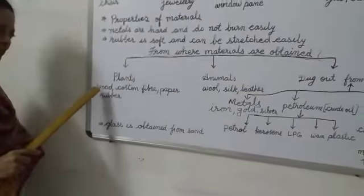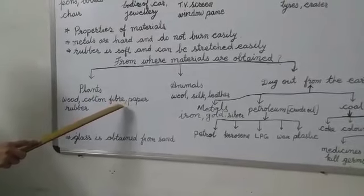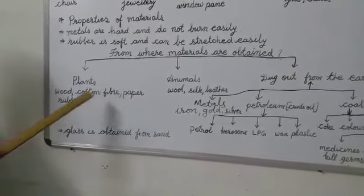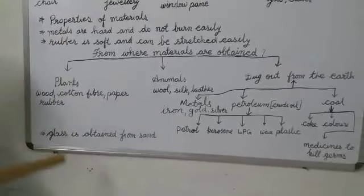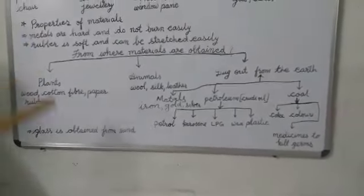And as you know that, wood is used to make furniture. Cotton fiber is used to make cloth. Paper is used to make books. And rubber, we have seen, it is used to make rubber bands, tires, tubes and other things.